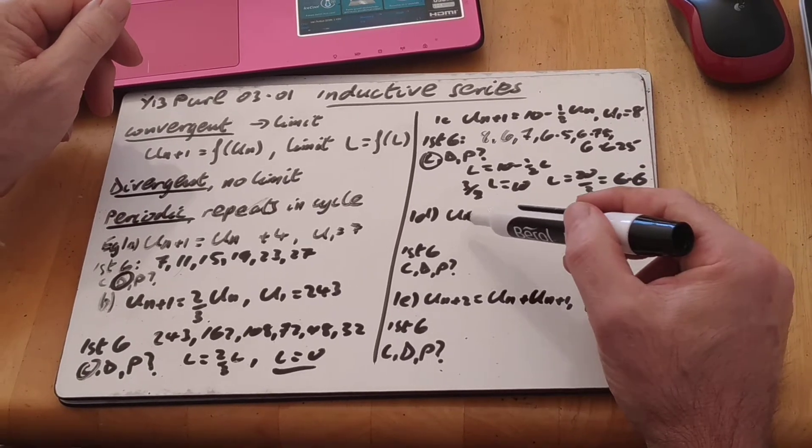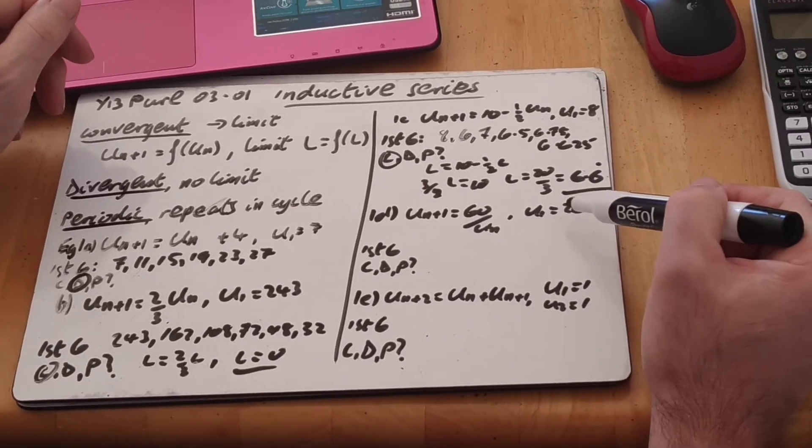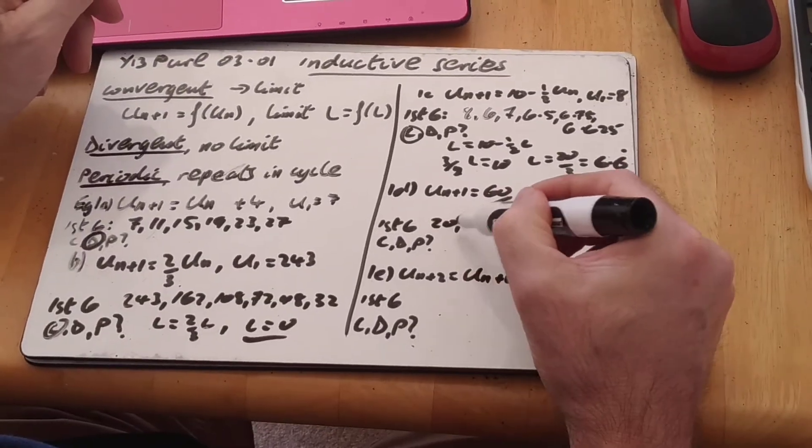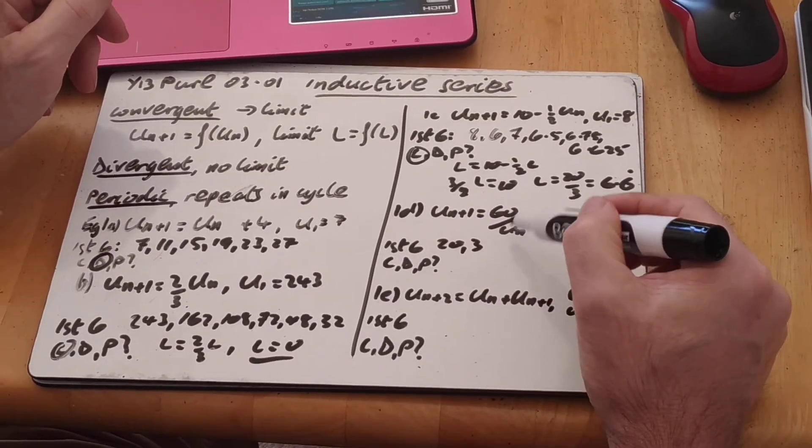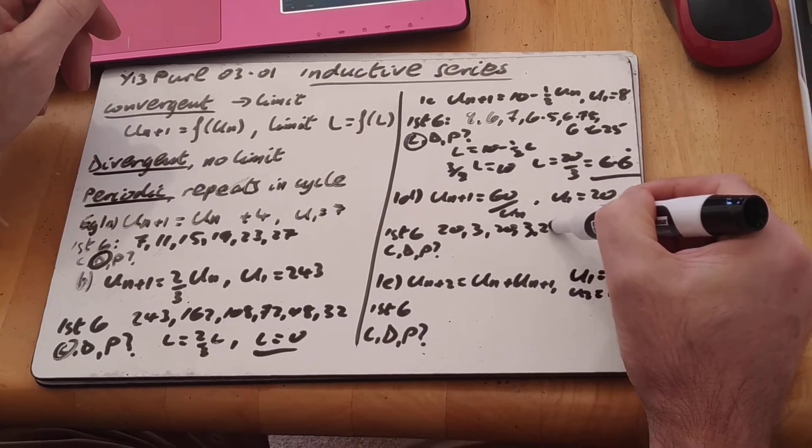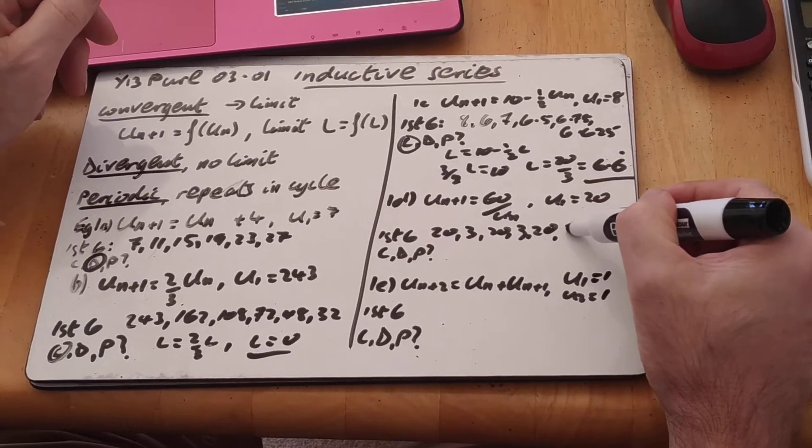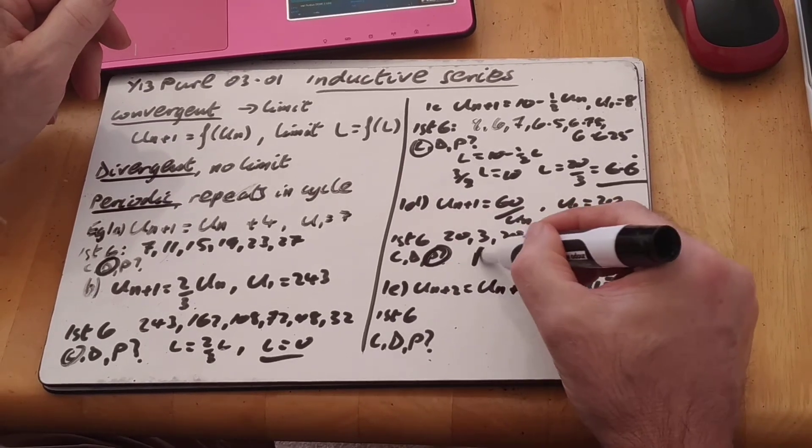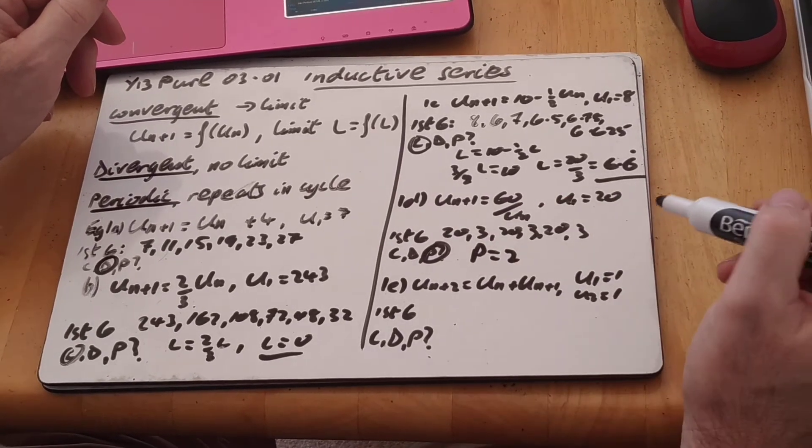D, u of n plus 1 equals 60 over u n, u1 is 20. So 20 in, 60 over 20, 3. 60 over 3, 20, and so on. What's going to happen in this case? Well, you can see, can't you? Periodic, and the period is 2, because it repeats every two numbers.